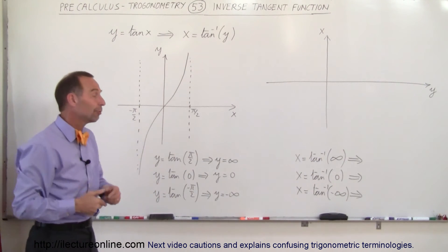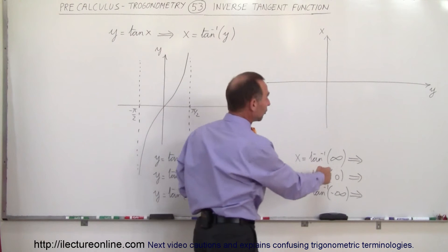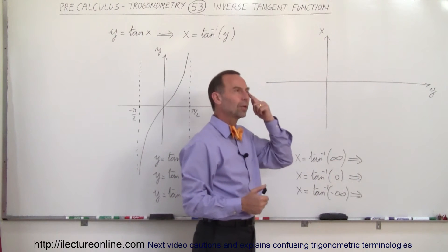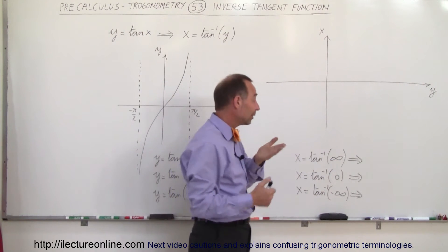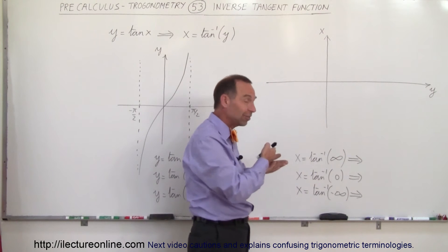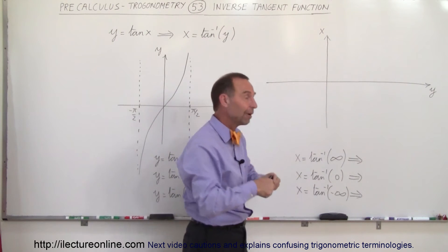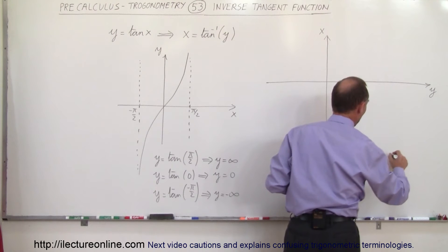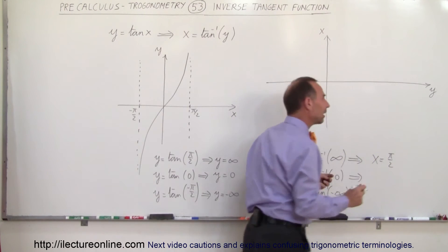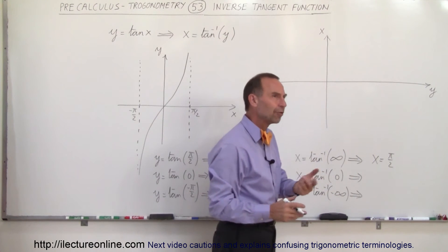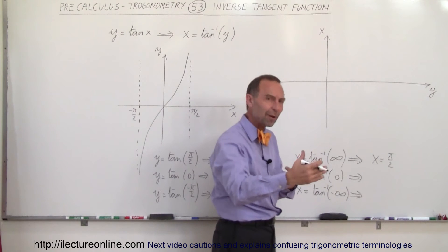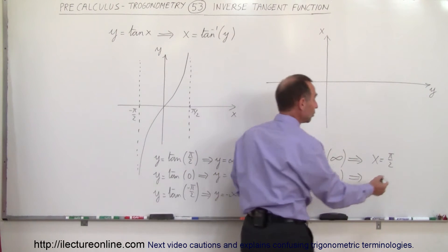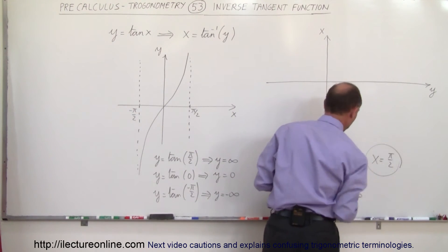So when we do things in reverse: if I give you the value of the function — infinity — and I say what is the angle, you realize that when the angle x is equal to π over 2, you get the value of infinity, so the answer is x is equal to π over 2. But then you realize that happens again at 3π over 2, and 5π over 2, and 7π over 2 — there's an infinite number of values, but you can take the closest value right there.